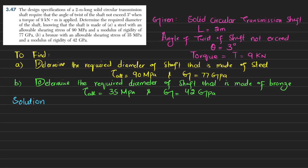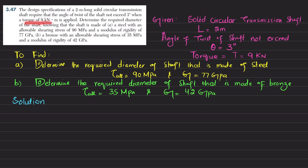Welcome back. Problem 3.47. The design specification states that a 2-meter long solid circular transmission shaft is required such that the angle of twist does not exceed 3 degrees when a torque of 9 kilonewton-meters is applied. Determine the required diameter of the shaft knowing that the shaft is made of steel with allowable shearing stress of 90 MPa and modulus of rigidity 77 GPa.